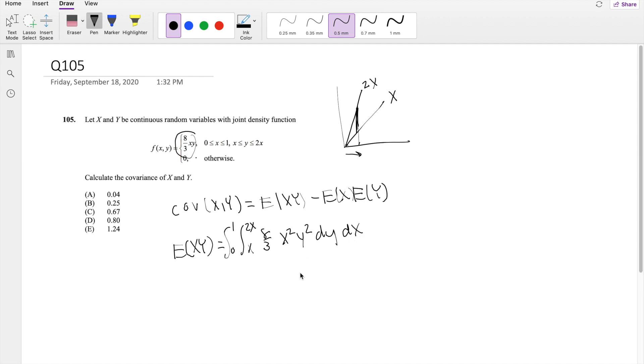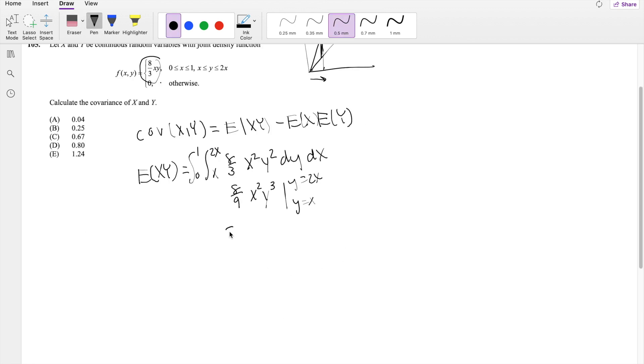Solving this in terms of y, you get y cubed over 3, x squared just stays a constant, 8 over 9, integrating y from x to 2x. So then, pulling out the constant, 8 over 9 x squared. When I plug in the upper limit, you're going to get 8x cubed. Plug in the lower limit, you just get x cubed. So then this is equal to 56 over 9 x to the fifth, right, because you add the exponents when multiplying, dx.